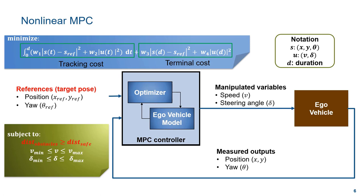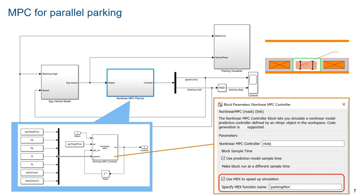The reference for the MPC controller is the target parking lot. In the Simulink model, we have three blocks: one for the ego vehicle model, one for the nonlinear MPC, and one for the parking visualizer. Inside the nonlinear MPC planner, we have the nonlinear MPC controller, which provides the parameters for the nonlinear MPC to find a safe trajectory for the ego vehicle to follow.